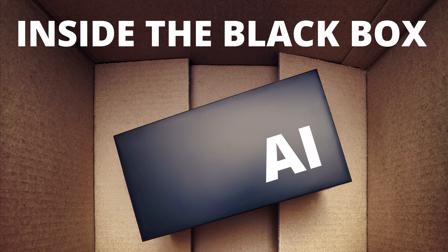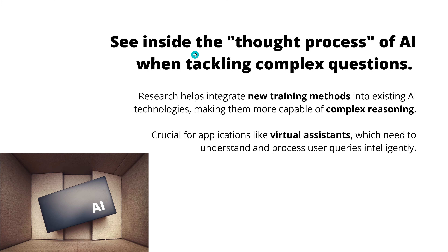Hello community! Today we look inside the black box that is called an AI system. If we want to see inside the thought process of an AI system when it is tackling complex questions, we now have some new research that helps us gain insight and maybe find new training methods for existing AI, making those AI systems more capable for complex reasoning. A simple use case is a virtual assistant in your car or at home, which needs to understand and process our queries much more intelligently.